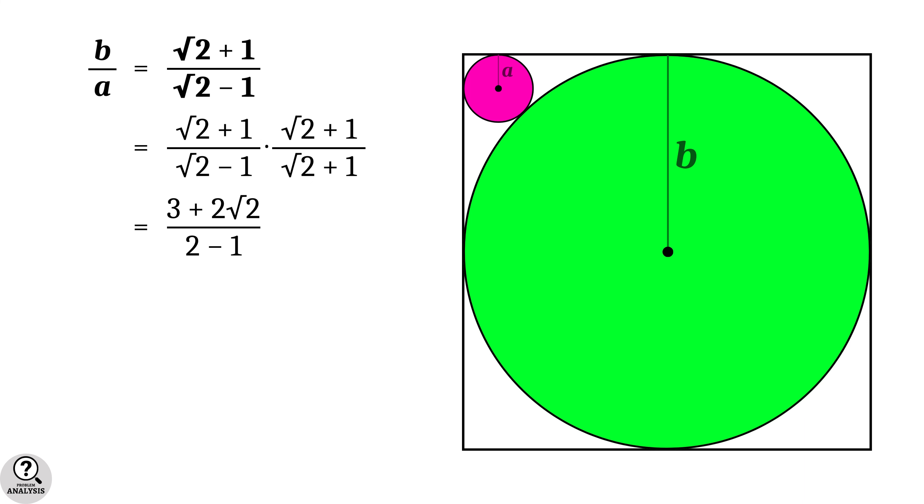That is, the ratio b/a is equal to 3 + 2 root 2, and this value is approximately equal to 5.82843 units. And that is the solution we are looking for.